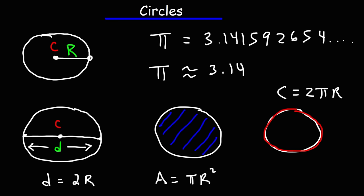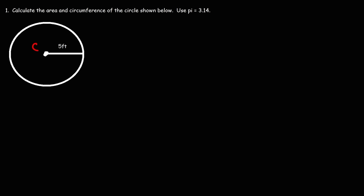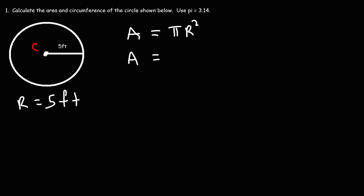So now let's work on some problems. Number one: calculate the area and circumference of the circle shown below. Use pi equal to 3.14. The radius of this circle is clearly 5 feet — it's the distance between the center and the point on the circle.